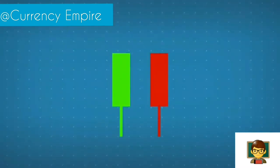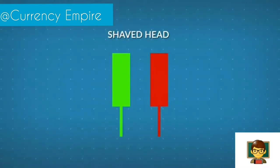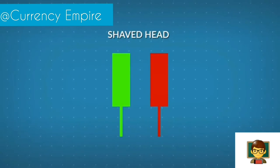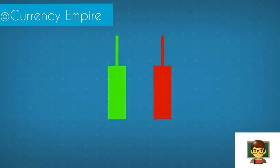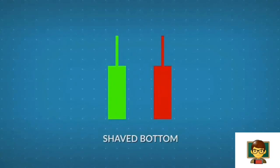If the candlestick has no upper shadow, it's said to have a shaved head. A missing lower shadow, on the other hand, is called a shaved bottom.